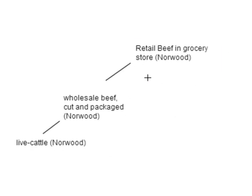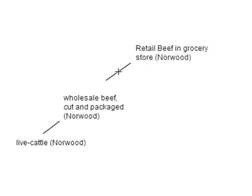There are other inputs that go into retail beef. To sell retail beef, you need refrigeration and labor in the grocery stores. For inputs into wholesale beef — if it's going to be cut and packaged — in addition to live cattle, you need plastic for the wrapping, cardboard for packaging, fuel for transport, and trucks for transport.